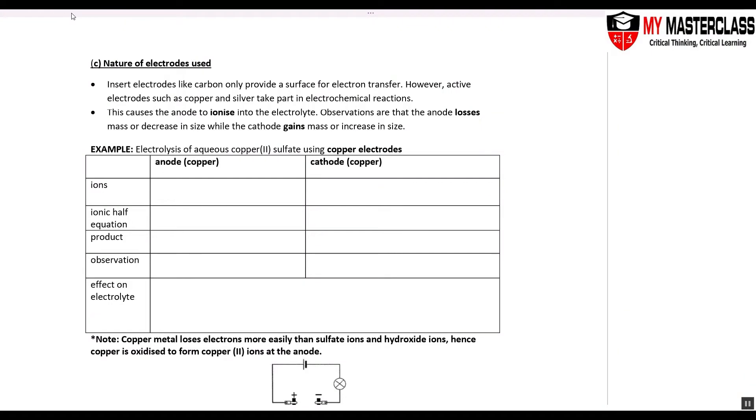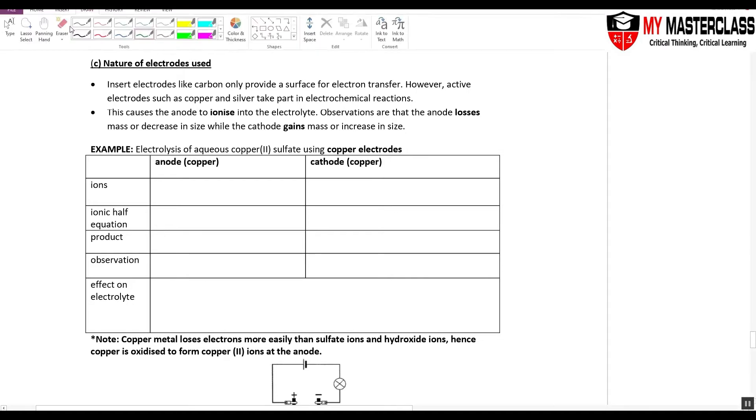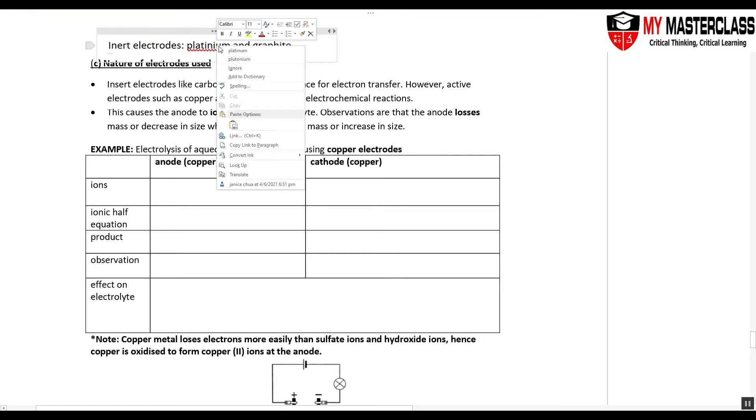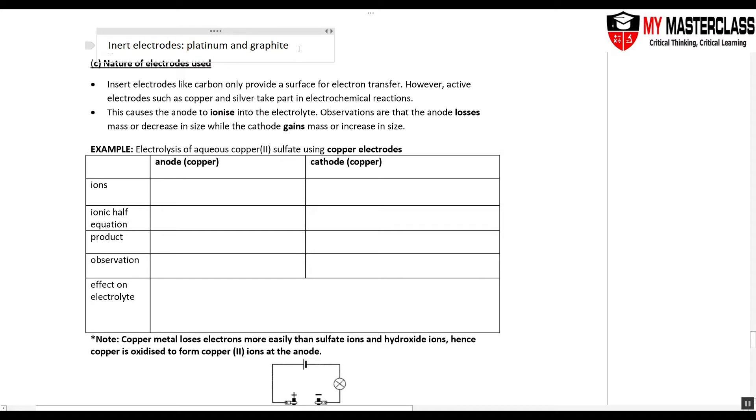All the examples that we have seen earlier on are electrolysis using inert electrodes. So inert electrodes like platinum and graphite, basically your carbon.